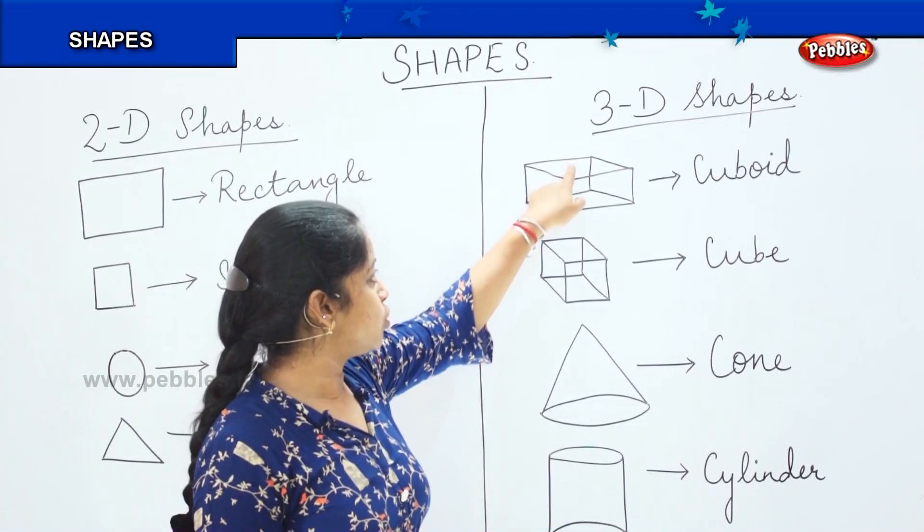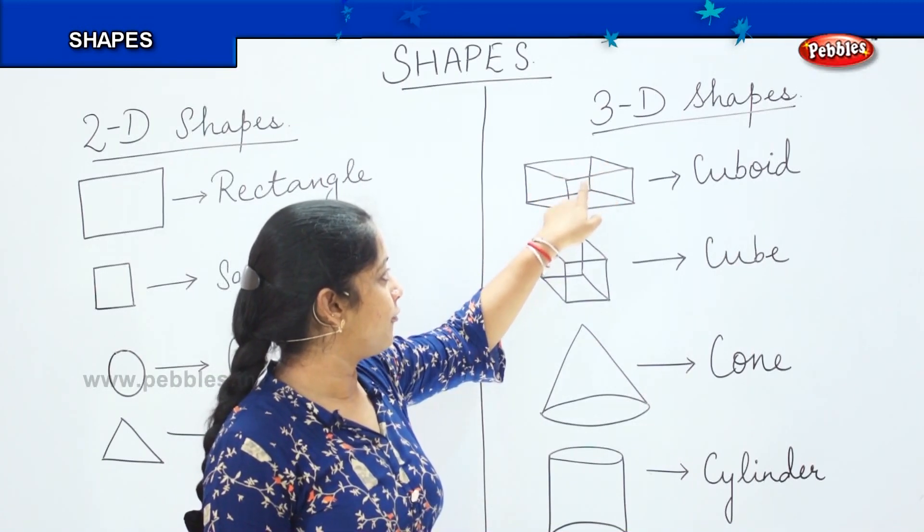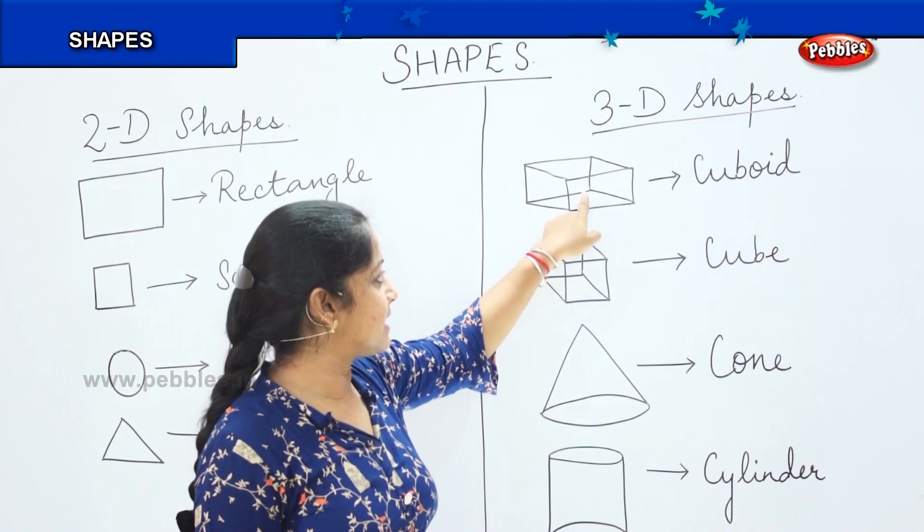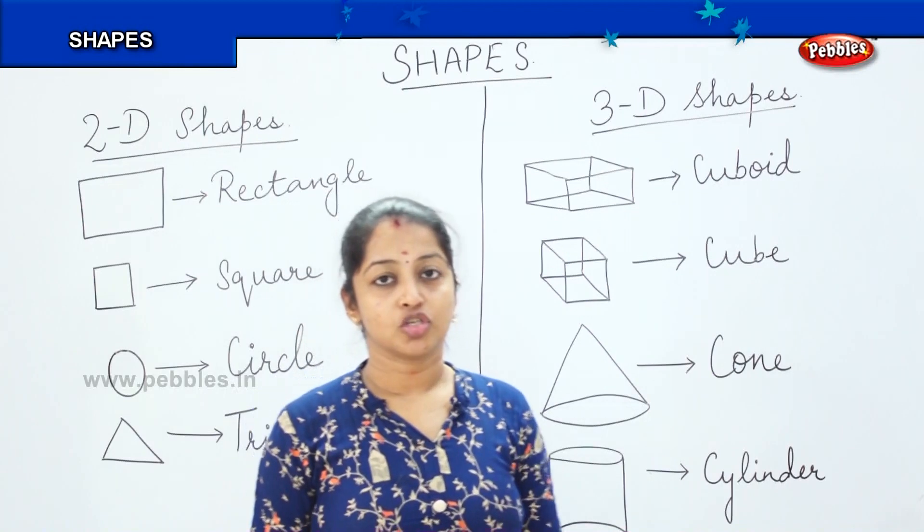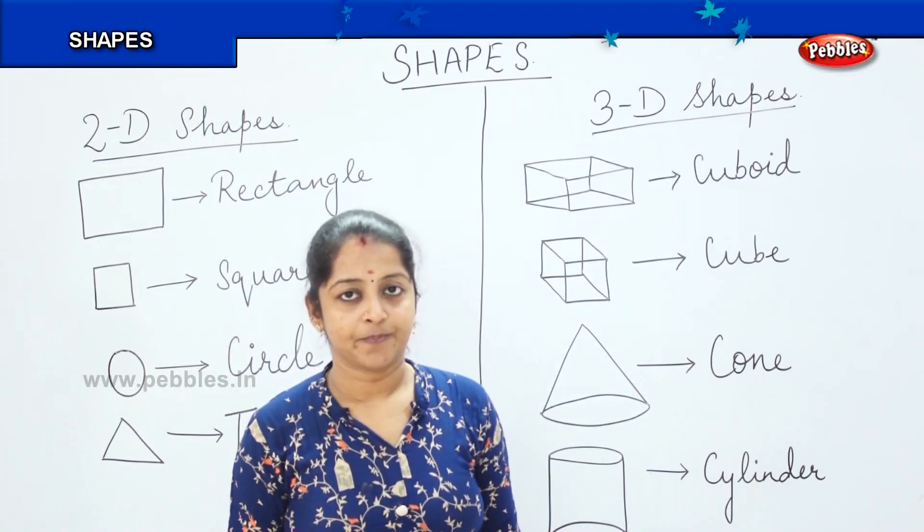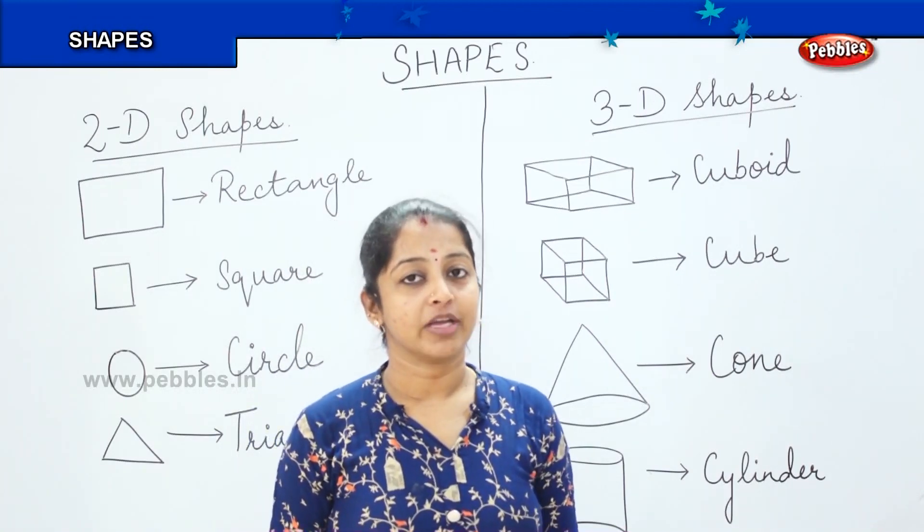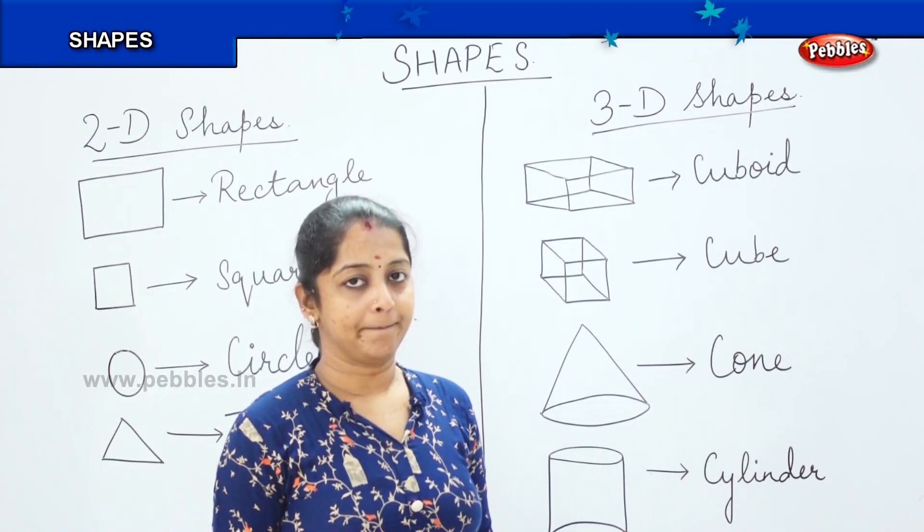It is 1, 2, 3, 4, 5, 6, 7, 8, 9, 10, 11 and 12. So it has got 12 sides and it is one of the 3D shape. Okay?